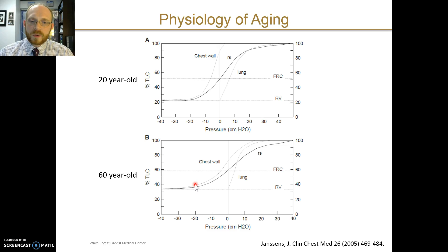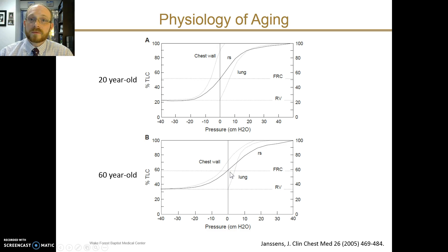Comparing to the elderly individual, chest wall recoil has decreased and the curve is now shifted more to the right, more towards zero. For the lung similarly, the older individual has a lung compliance that has decreased compared to the younger individual. The net result is that FRC occurs at a higher lung volume than in the younger person.